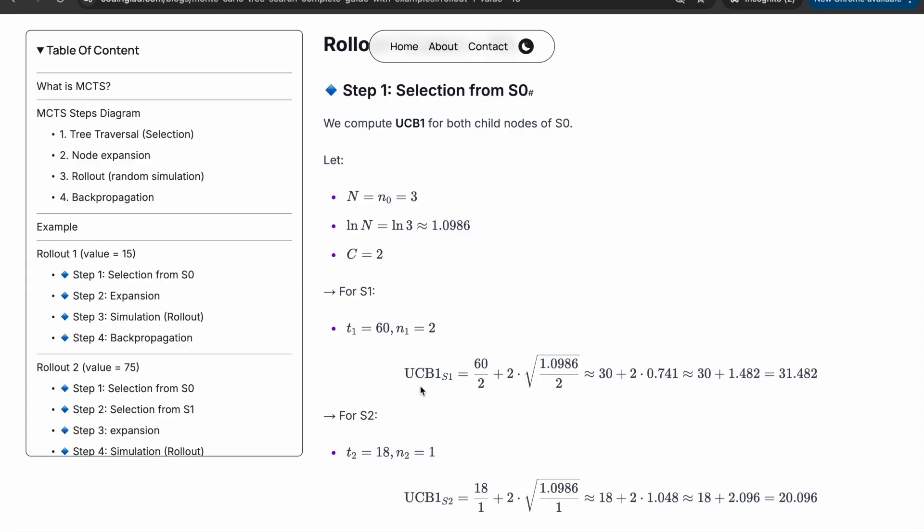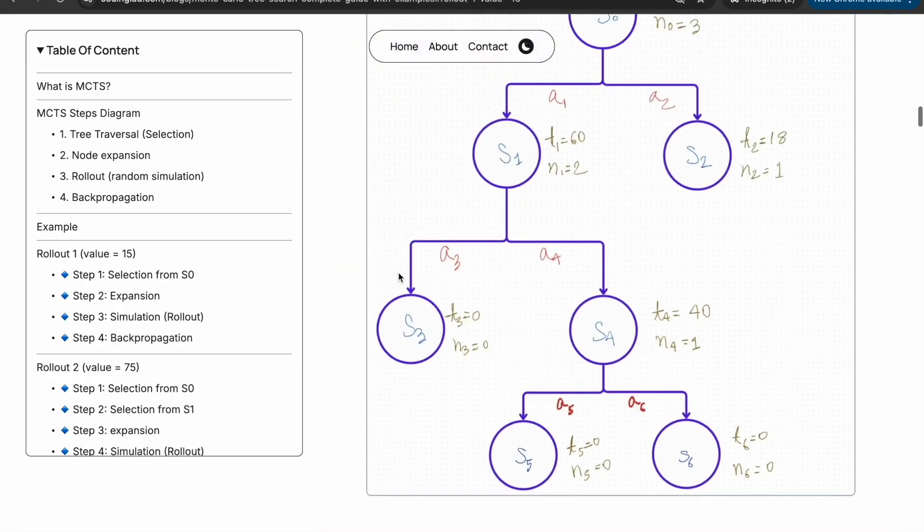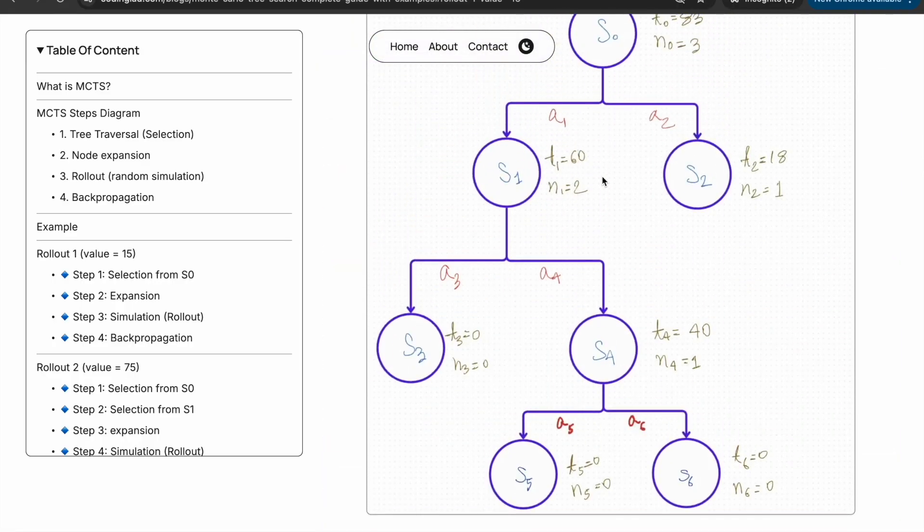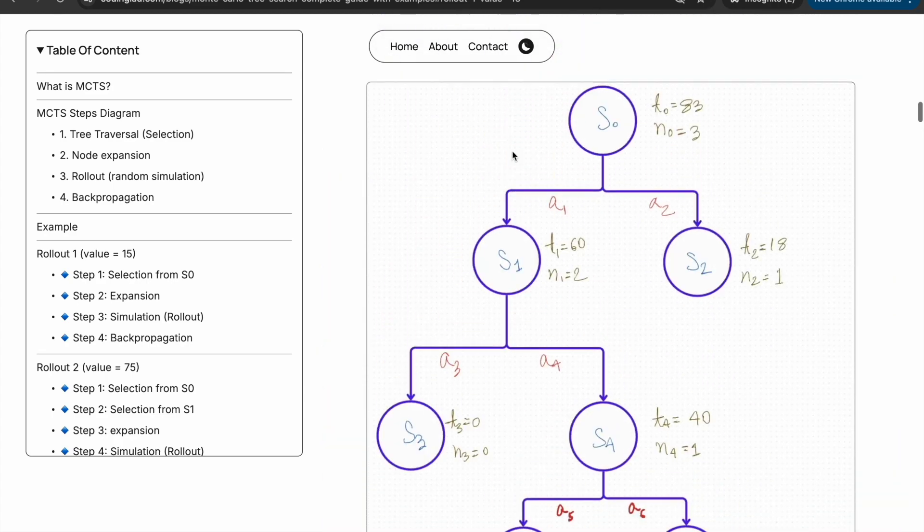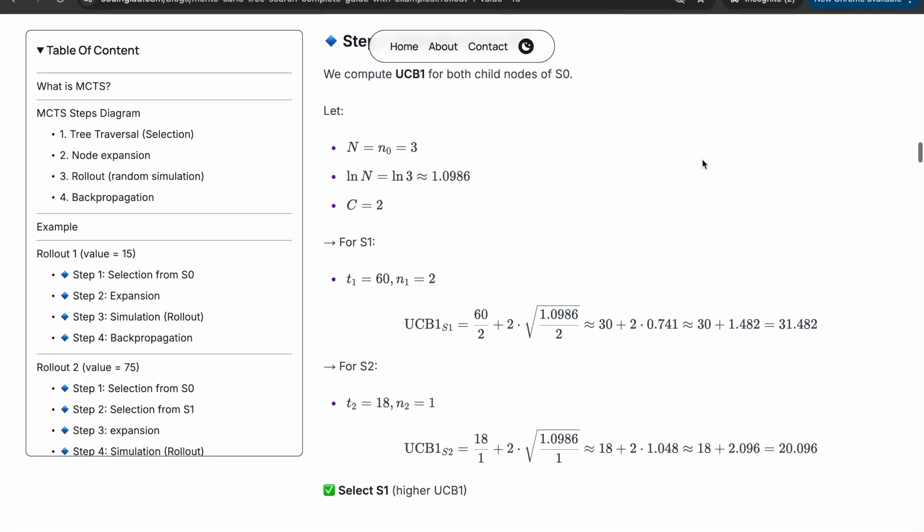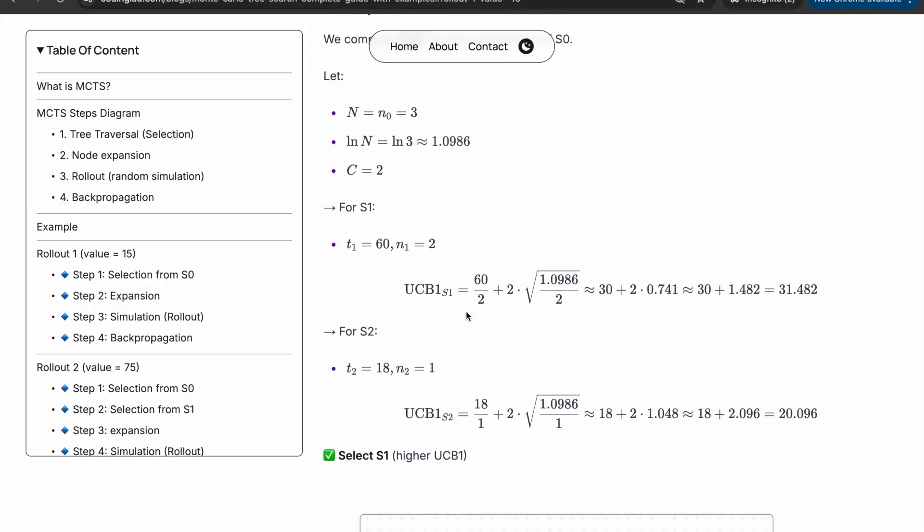If we calculate the UCB1 for s1, it is 60/2 + C * sqrt(ln(3)/2), where 60 is t1, 2 is n1, and the parent node s0 has n value equal to 3. So UCB1 of s1 becomes 31.48. For s2, it is 18/1 + C * sqrt(ln(3)/1), and the UCB1 value becomes 20.096.